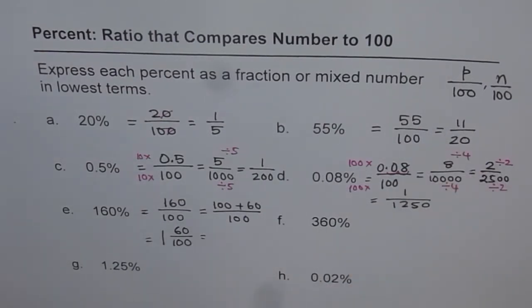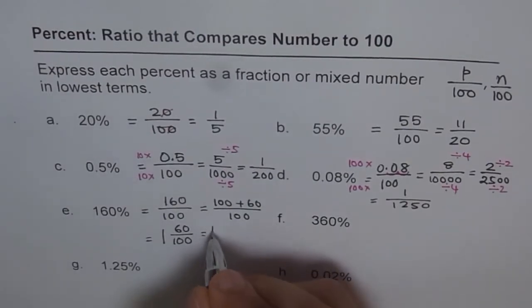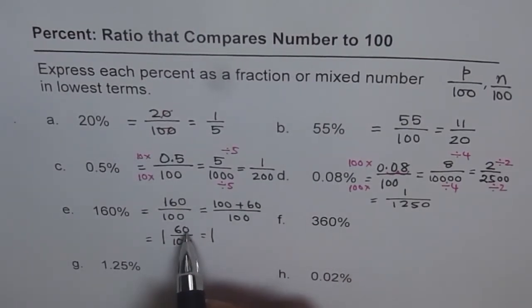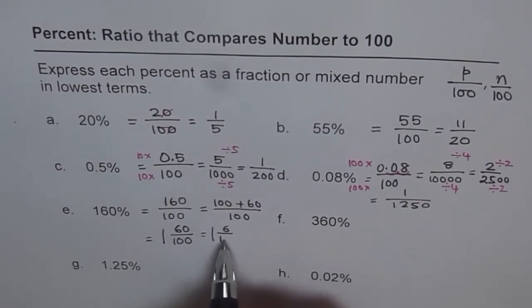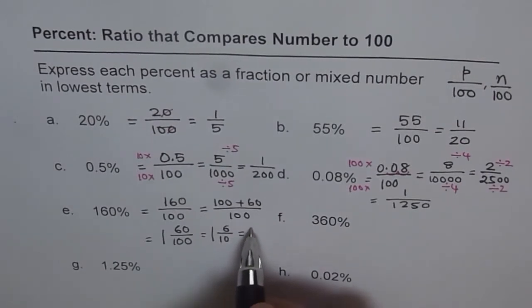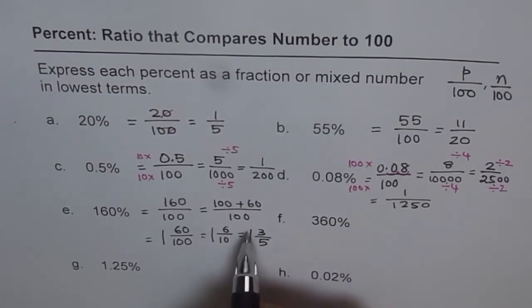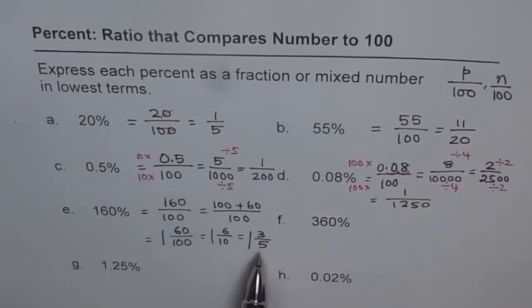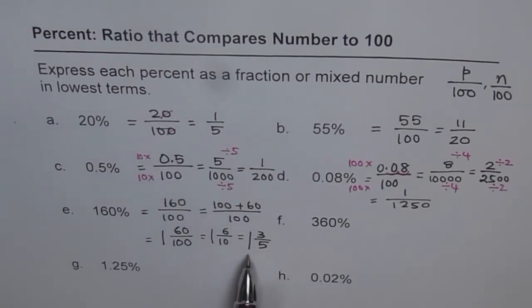Now you can apply the techniques learned earlier to simplify. So, we can now write this as 1 over. Now I can divide by 10 these two numbers. So I get 6 over 10. Still, there is a common factor of 2. So I can write this as 1, and 6 divided by 2 is 3, and 10 divided by 2 is 5. 1, 3 over 5. All these are equivalent fractions of 160%. Now, since 160 is more than 100, you get improper fraction, which could be converted to a mixed number. 1 whole, 3 over 5 means 160%.